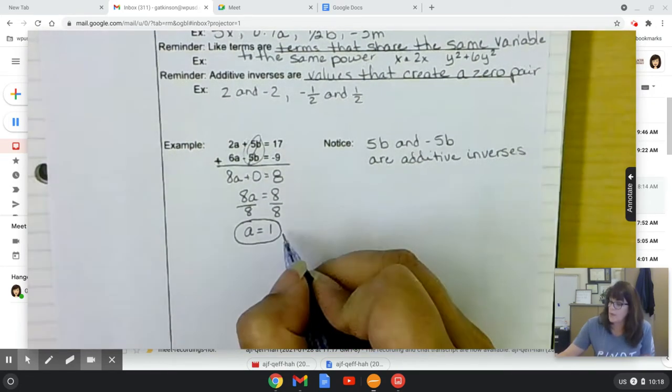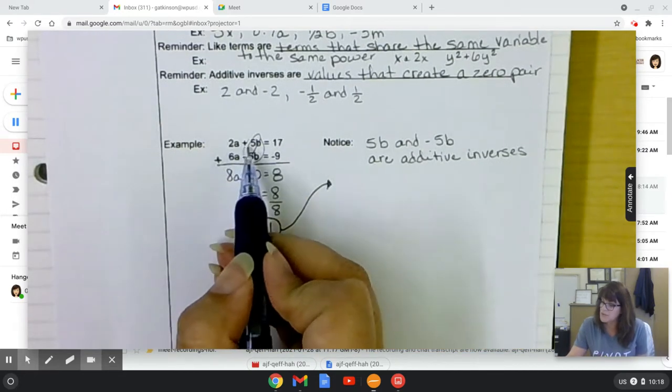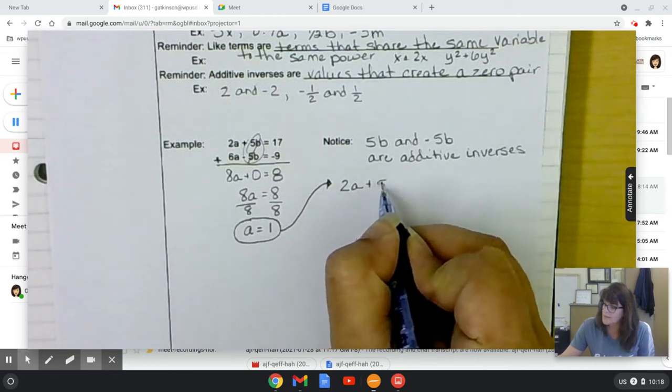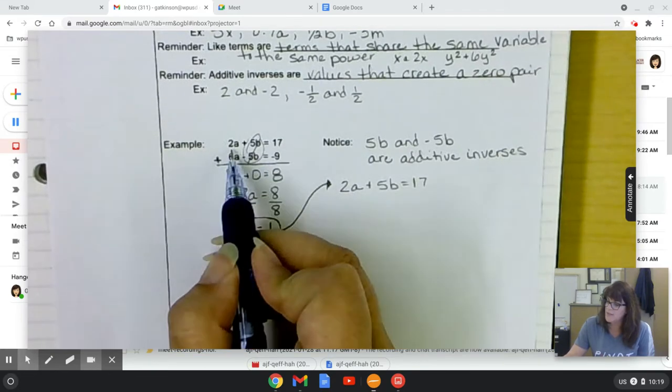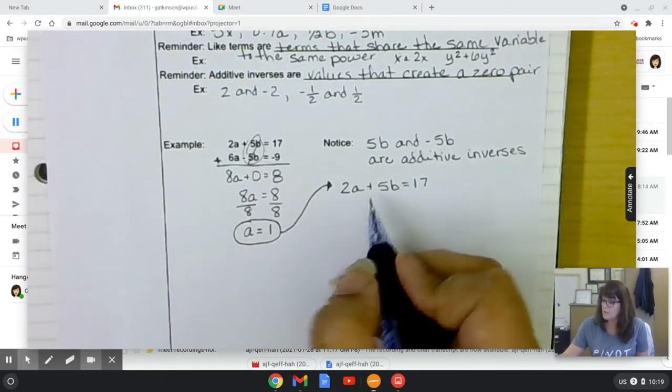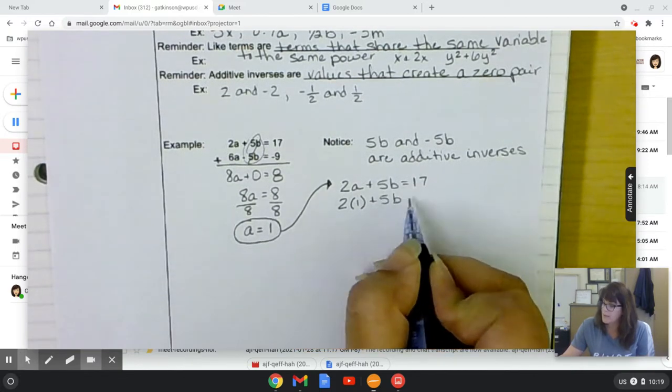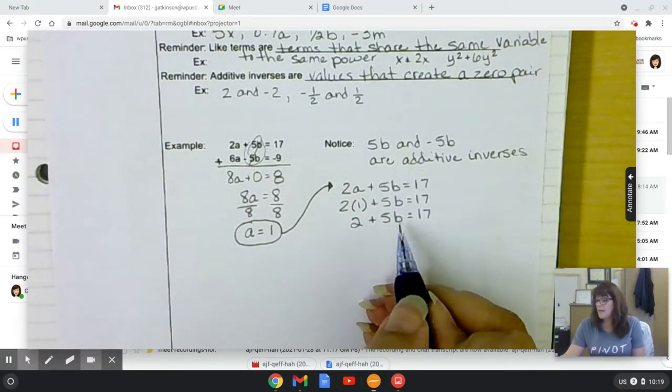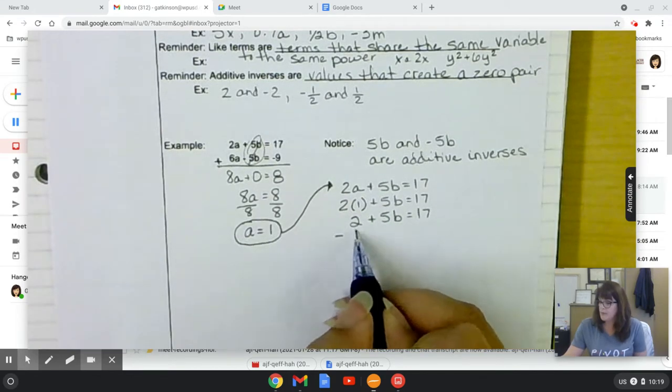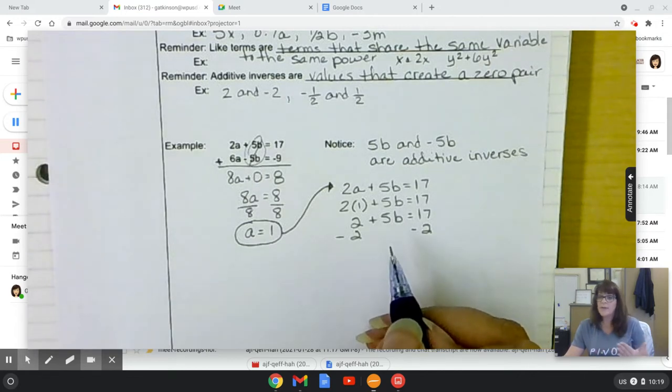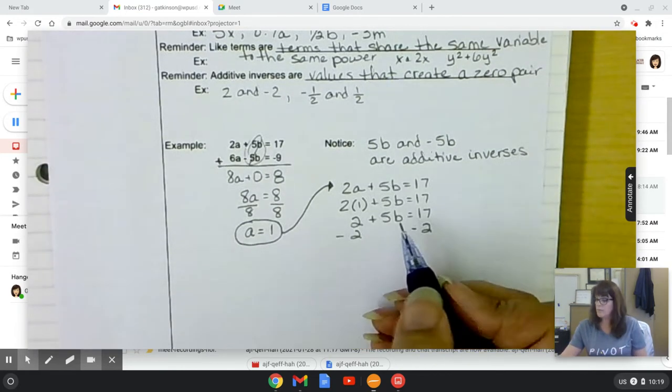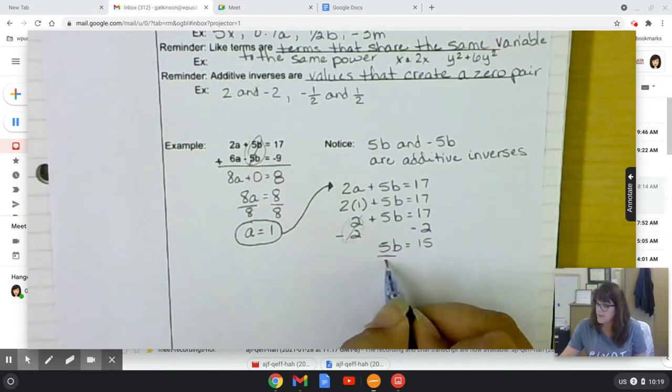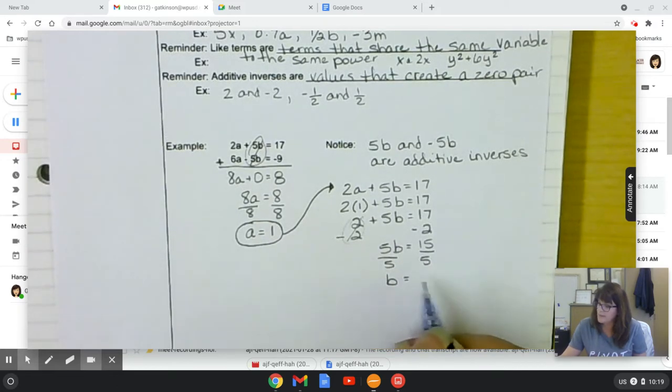Now, once I know that a equals 1, I can choose between these two equations and see which looks less complicated. Neither of them look very complicated. So 2a plus 5b equals 17. I'm just taking this top equation, and I'm going to substitute in the value of a. 2 times 1, 5b, 17. 2 plus 5b equals 17. Now we need to get b all by itself so that we have a value. And so at this point, I'm just solving an equation. This is a review task. Not that you might not need some practice with it. That cancels out. 5b equals 15. Divide both sides by 5. B equals 3.